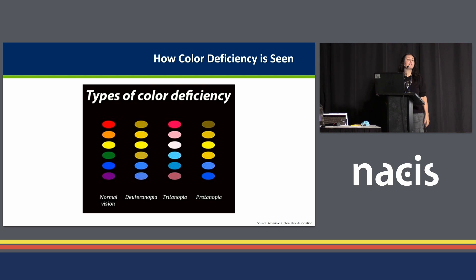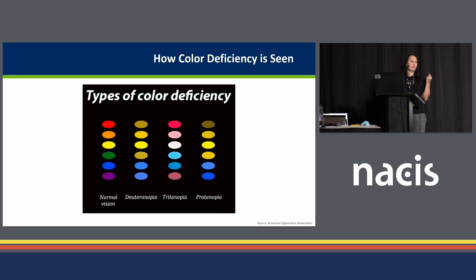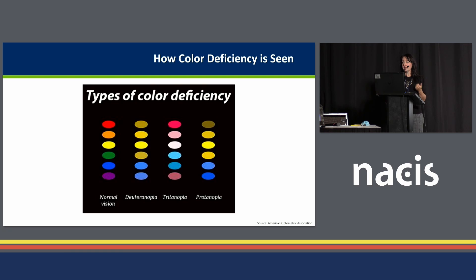Just to give you an idea of how color vision deficiency is seen: with normal vision you see a rainbow of six different colors, but Protanopia and Deuteranopia are forms of red-green color vision deficiency, and Tritanopia is a form of blue-yellow color vision deficiency. These are things we can address in the colors we choose within our maps.